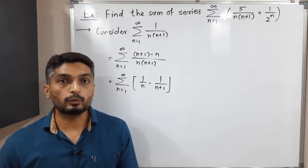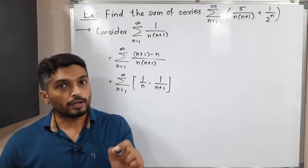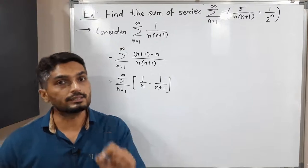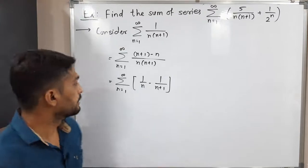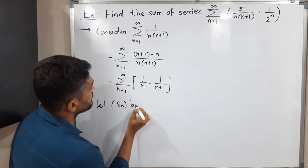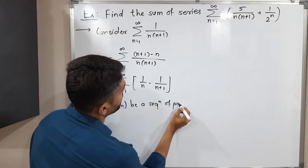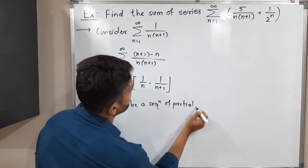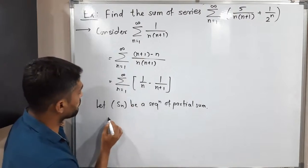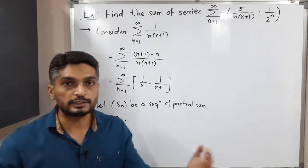With the help of the sequence of partial sums, we are going to find the sum of this series. Since we know that where the sequence of partial sums is convergent, at that same point the series also converges. So let S_N be the sequence of partial sums of this series. Therefore S_N equals the sum of the first N terms.